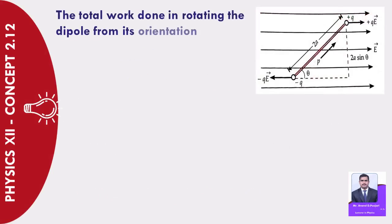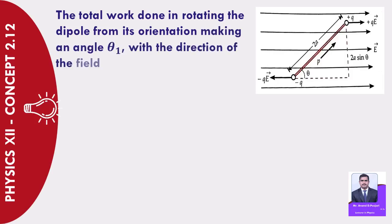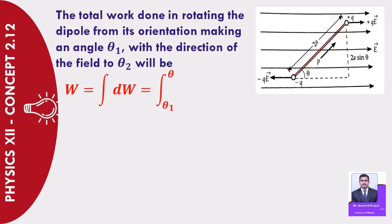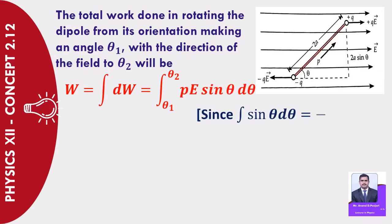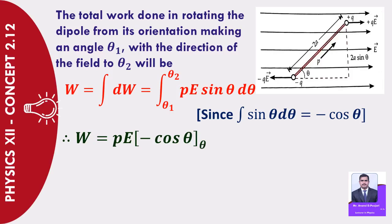The total work done in rotating the dipole from its orientation making angle θ₁ to θ₂ with the direction of the field will be: W = ∫dW = ∫(θ₁ to θ₂) PE·sin θ·dθ. Since ∫sin θ·dθ = −cos θ, therefore W = PE[−cos θ] from θ₁ to θ₂ = PE(cos θ₁ − cos θ₂).